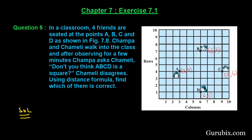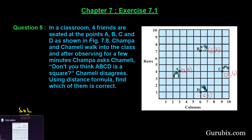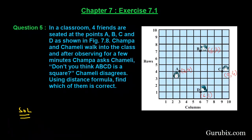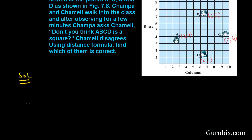In a square, all four sides are equal and the diagonals are also equal. So first we shall find the distance of all four sides, and then we shall find the distance between the two diagonals using the distance formula. First, we shall find the distance between points A and B.